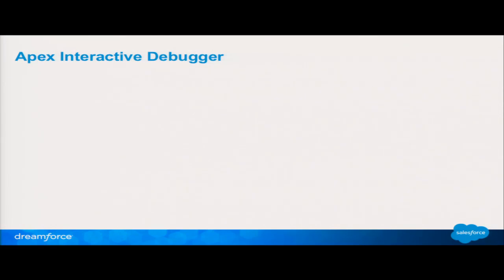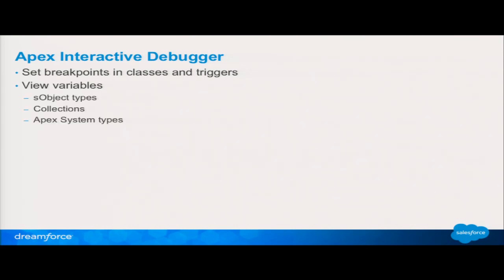So, interactive Apex debugger — what do you get? You're going to get a debugger that works. Set breakpoints in classes and triggers, stop your execution regardless of whether you come in from clicking save on a UI page or from a batch class or some other endpoint. You're going to get the ability to view variables — not just class member variables but the contents of your SObjects, collections of SObjects, and some of our system types: things that are harder to see today until you're done using them. So you'll be able to see those things in the explorer.